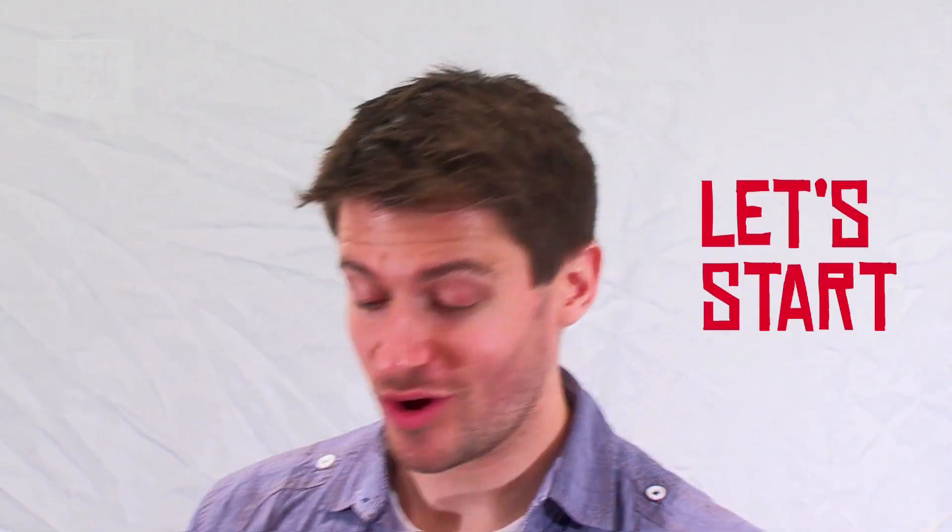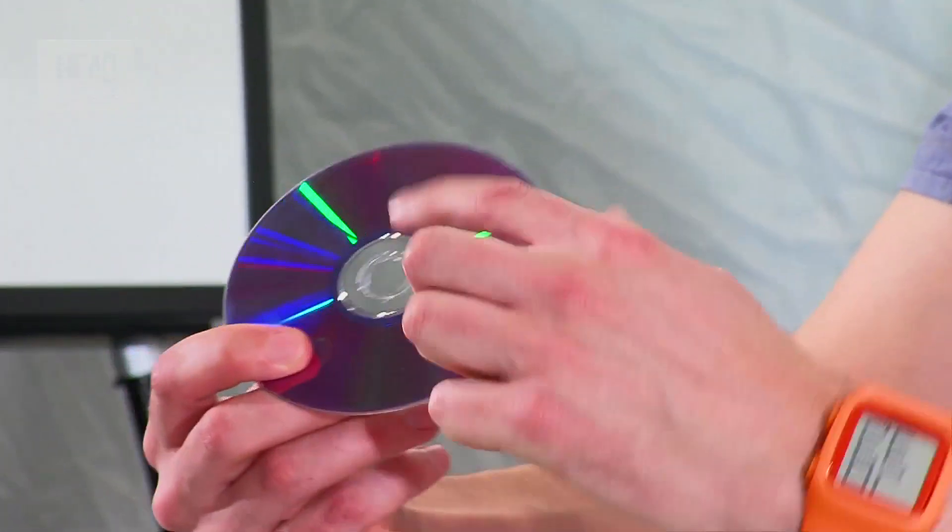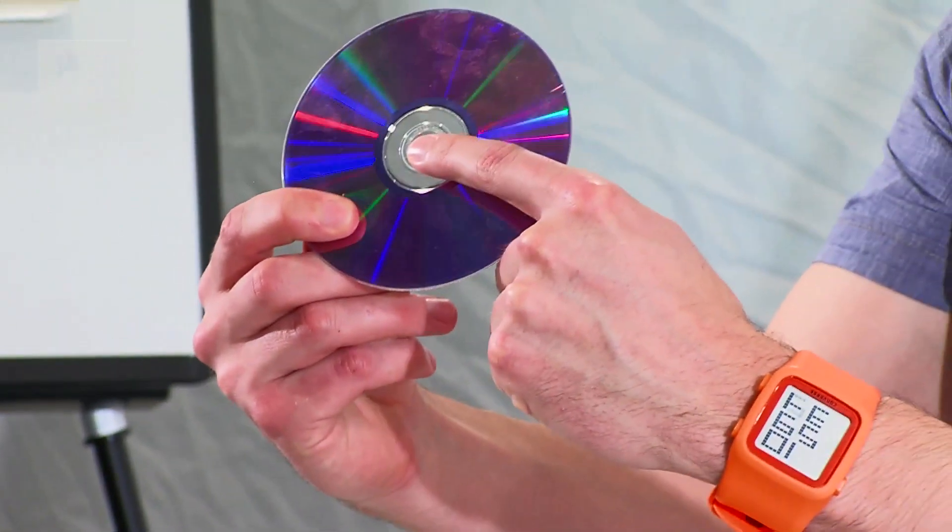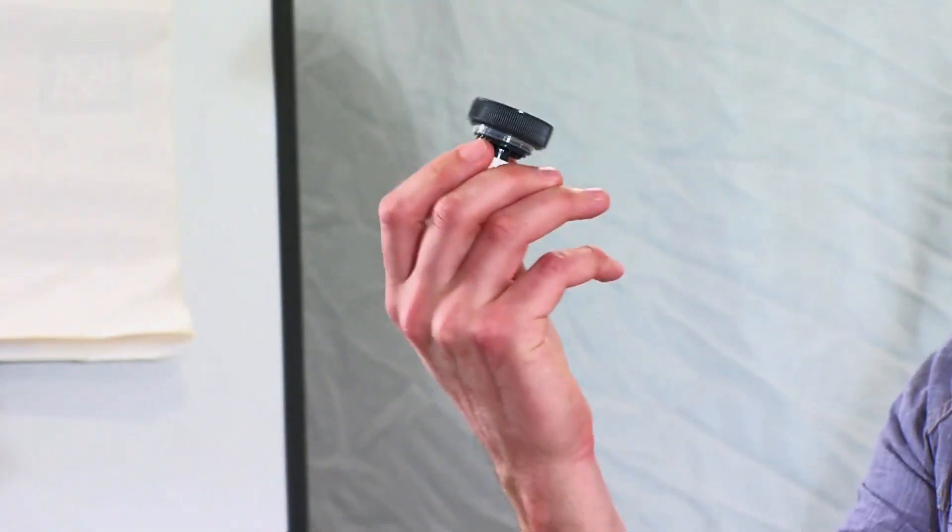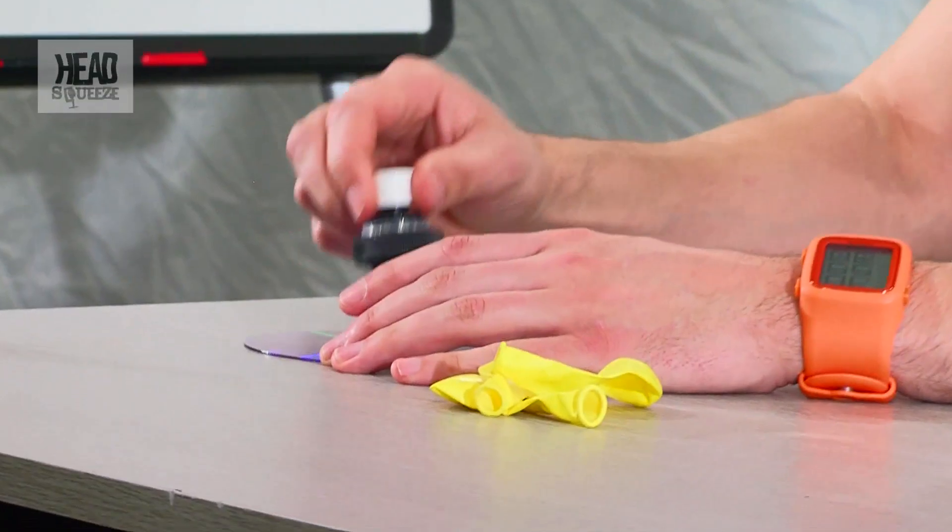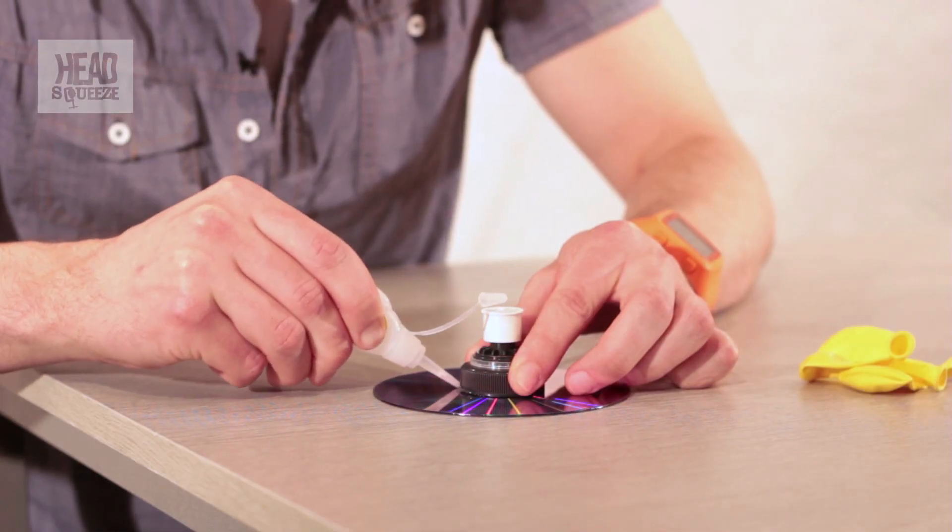So let's start making our own hovercraft model. Okay, first of all you take the CD, your blank CD here, and what we want to do is cover up the hole in the middle here with the sports bottle cap. Now we're just going to glue that on there very simply.